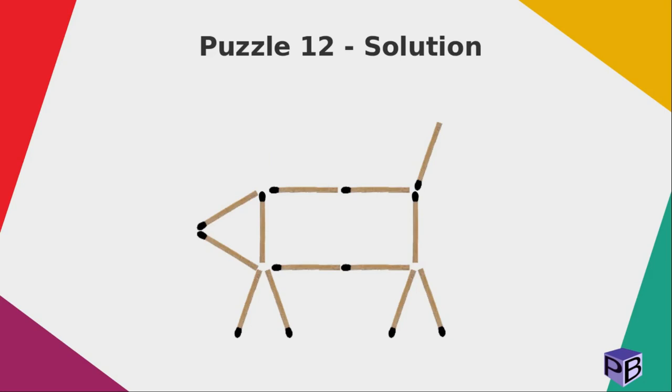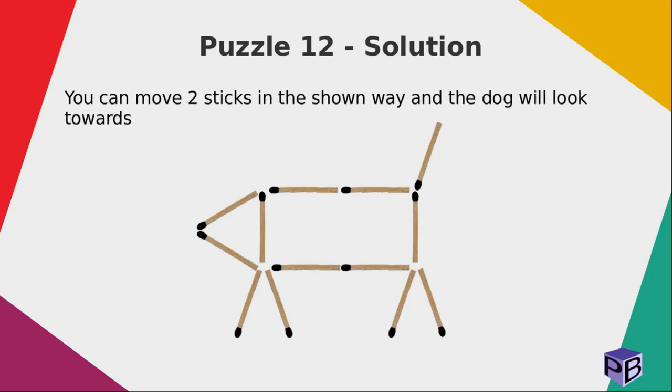Here is the solution. You can move two sticks in the shown way and the dog will look towards the right direction. See, so we have solved the puzzle.